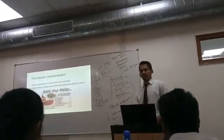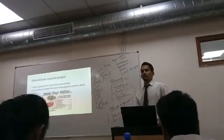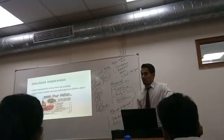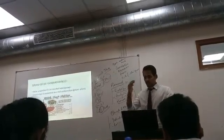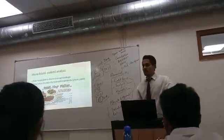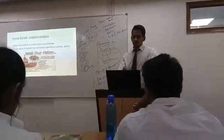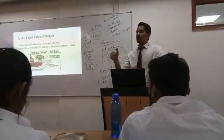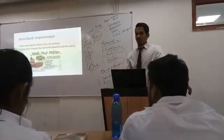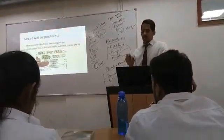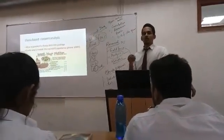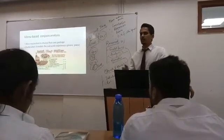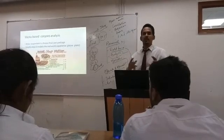The fourth type is menu-based conjoint analysis. For example, if you go to McDonald's, you can see a menu for two or a menu for four. According to your needs, you can select different features provided by them — for instance, 'invent your own platter,' where you choose what you want and they tell you the rate. Another example is phone plans: 1 GB per day or 2 GB per day with different rates.